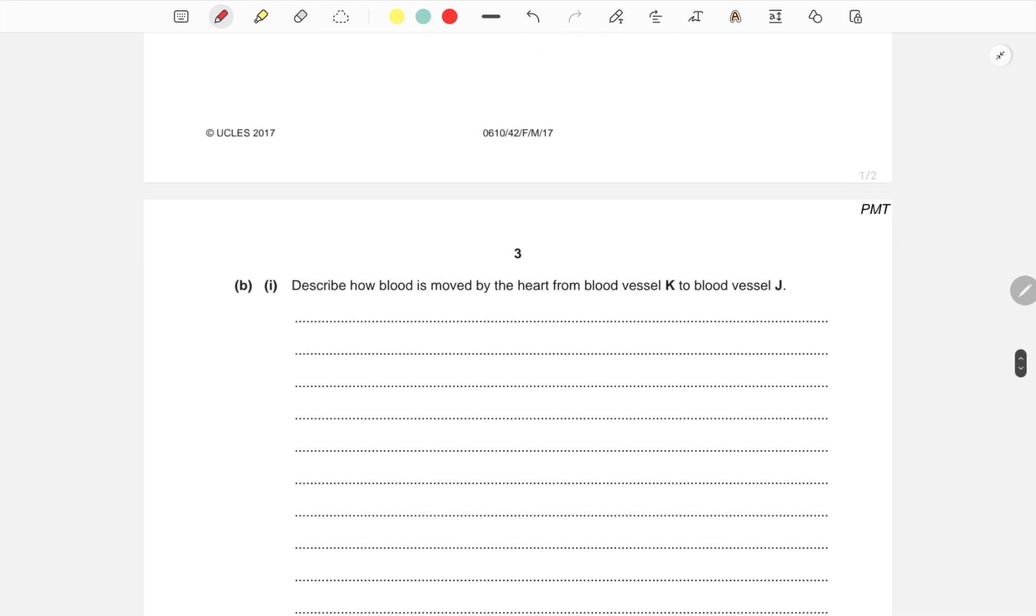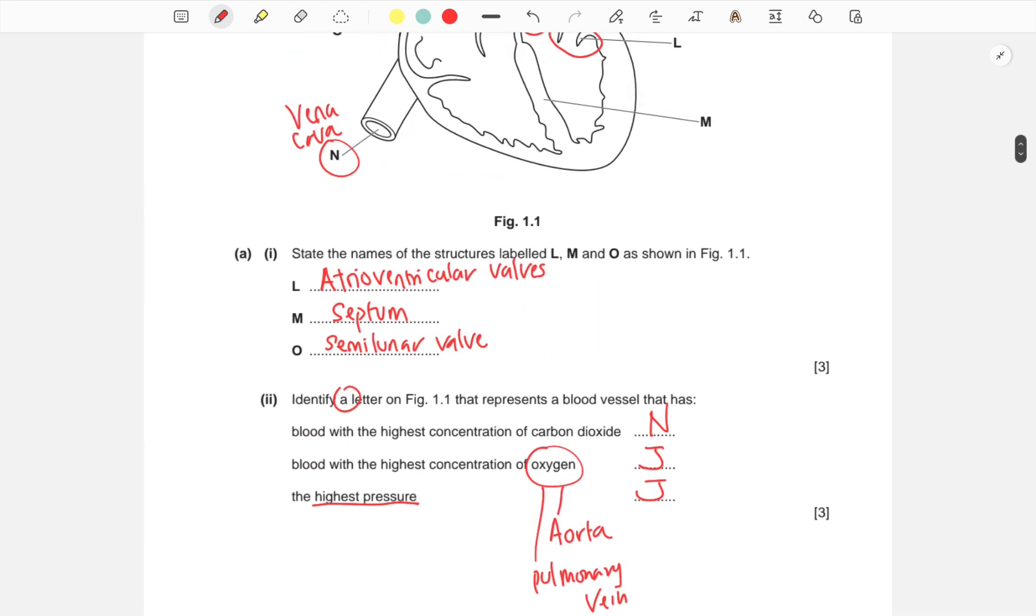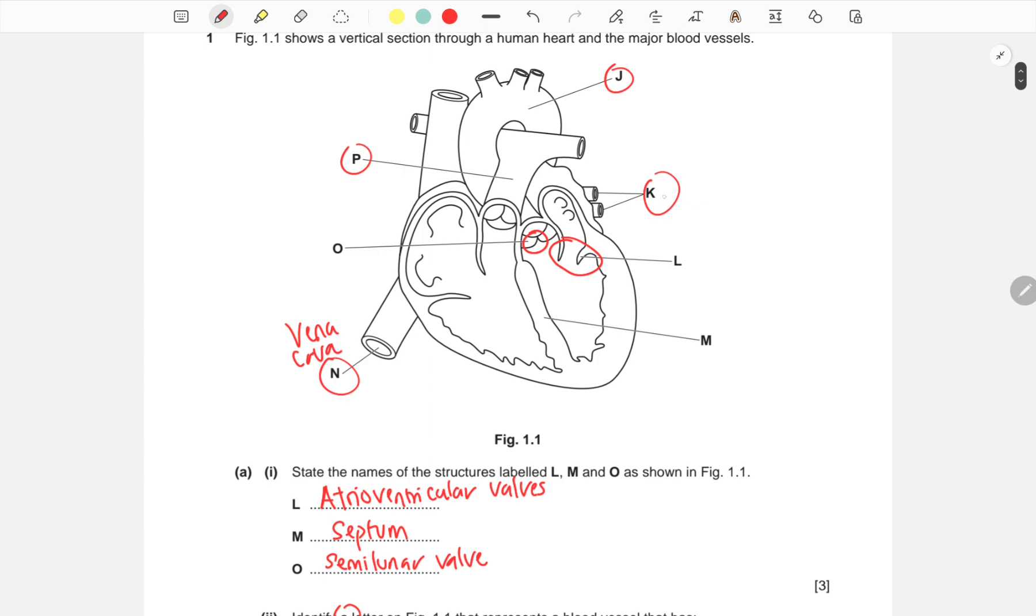Next, we have to describe how blood moves from K to J. K is the pulmonary vein, and J is the aorta. So we have to describe how the blood moves from the pulmonary vein to the aorta. As we know, the blood enters the left side of the heart through the pulmonary vein into the left atrium.